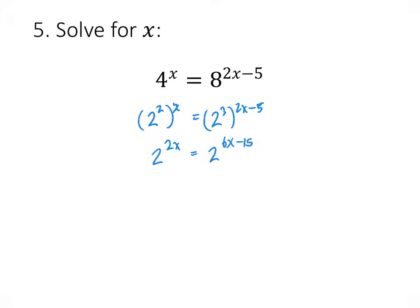Now since we have the same base, the exponents must be equal. So we get 2x equals 6x minus 15. Subtract 6x from both sides, divide both sides by negative 4, so we get negative 15 over negative 4, which simplifies to 15 over 4. And that's our solution.